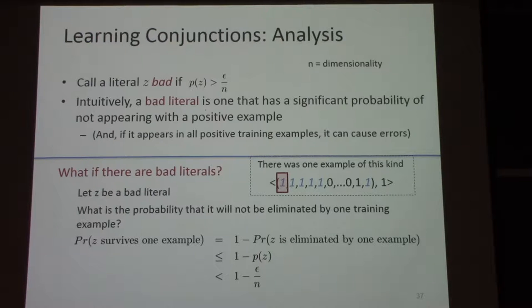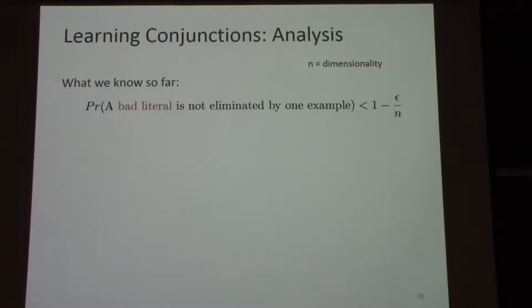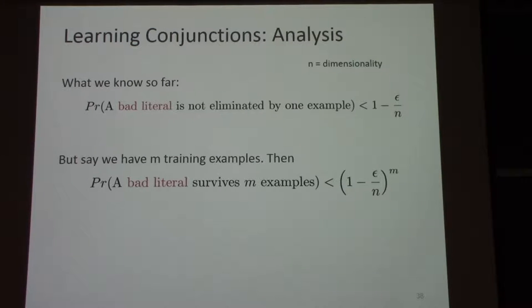At this point, what we know is the probability that a bad literal z is not eliminated by one example is less than 1 minus epsilon over n. With m training examples — independent by IID — the probability that it's not eliminated by m training examples is that quantity to the power m. What we want is to bound n times (1 minus epsilon over n)^m by some delta, and force delta to be small so that our life is good. All we need is to require that n times e to the power of minus m epsilon over n is less than delta. Take a log and rearrange things and you get what we had.